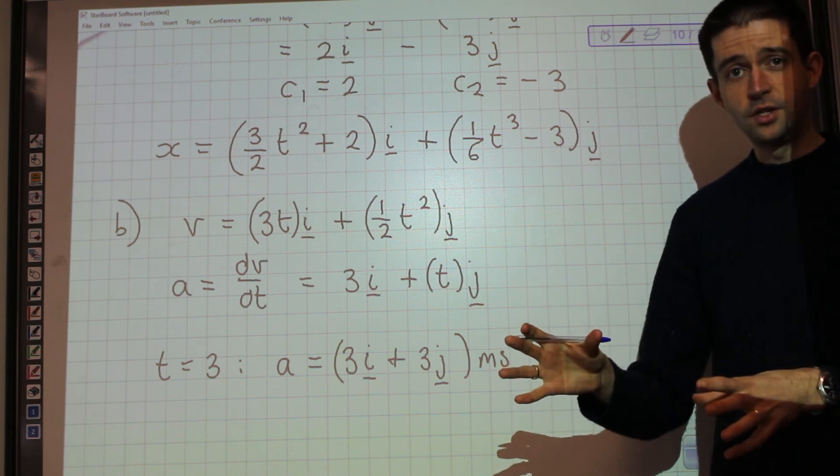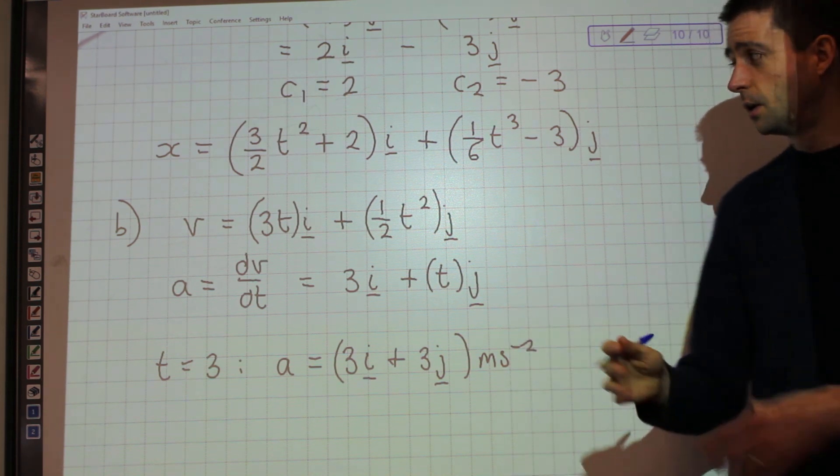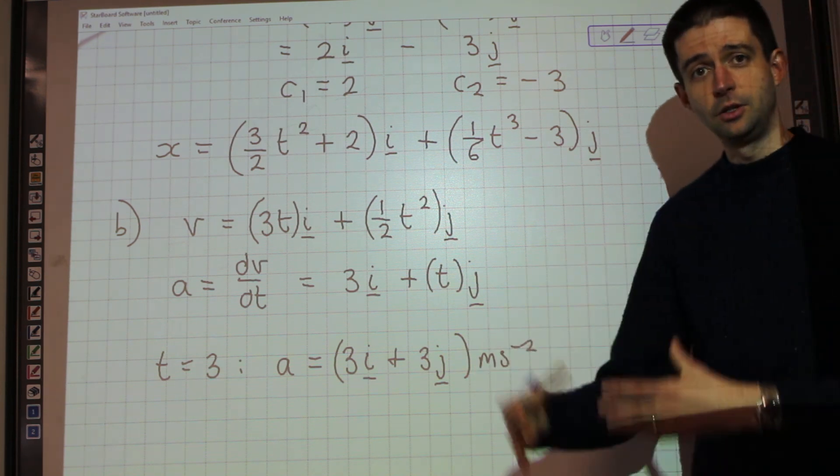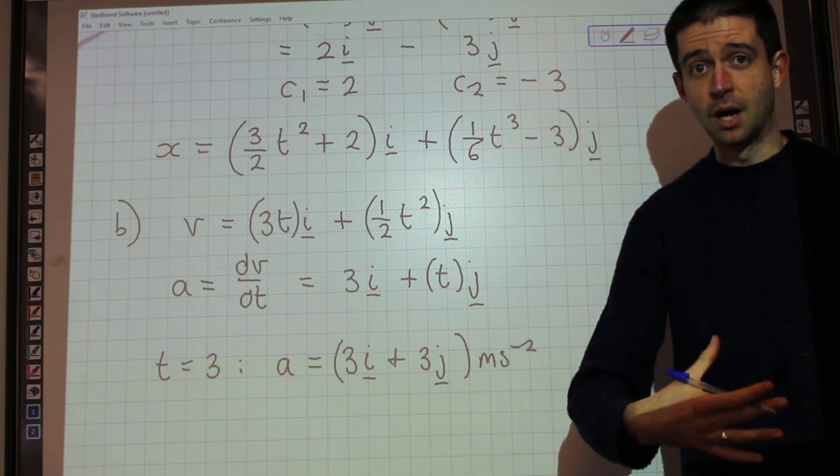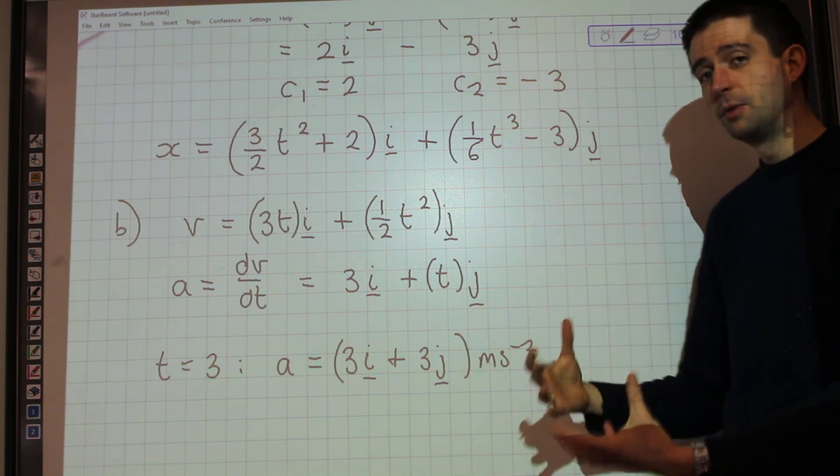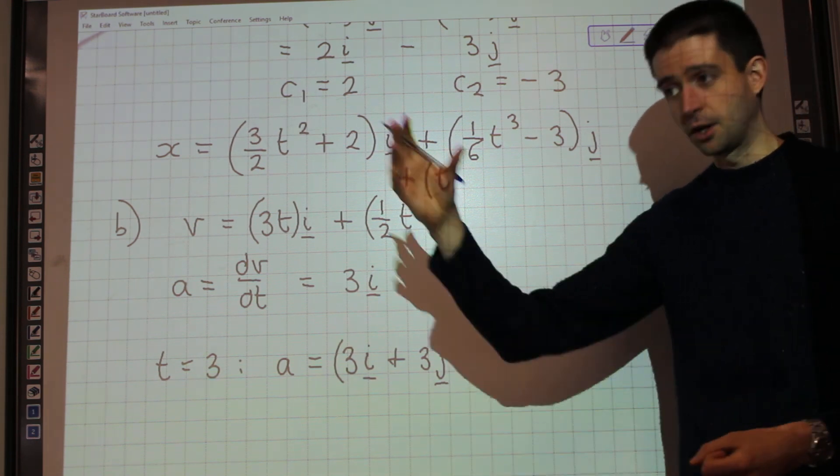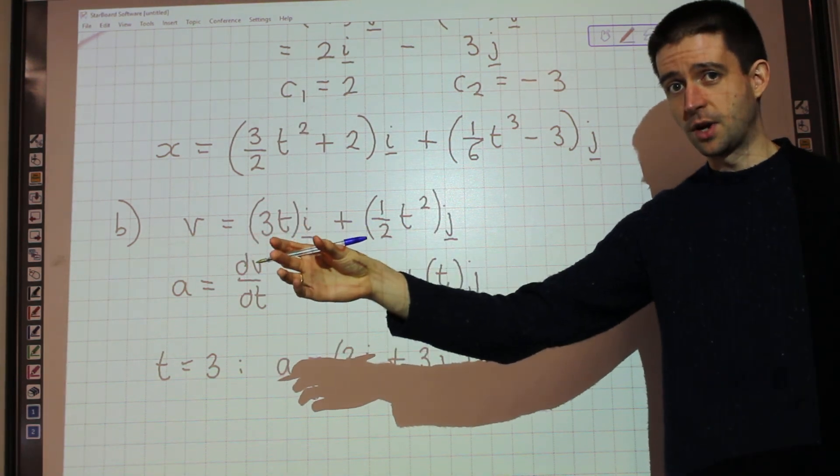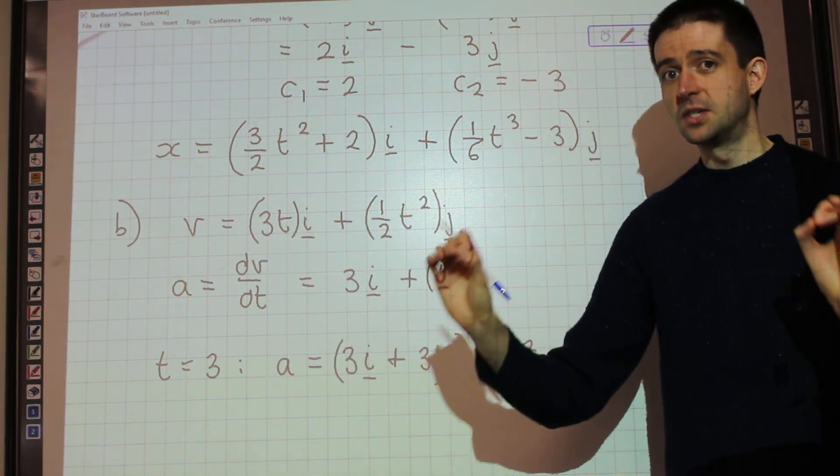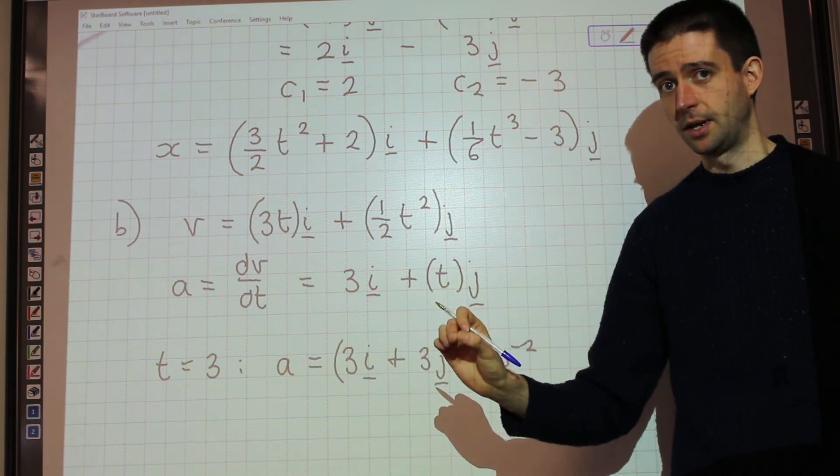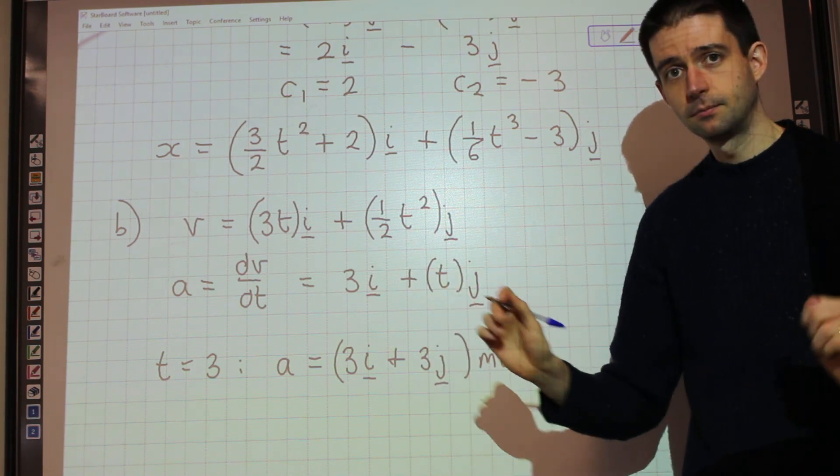So key points: whether you're integrating or differentiating with a vector expression, you treat the i component and the j component separately. You must remember that when you're integrating, you're going to get a constant of integration for i, a constant of integration for j, which aren't going to be the same as each other necessarily. Job done.